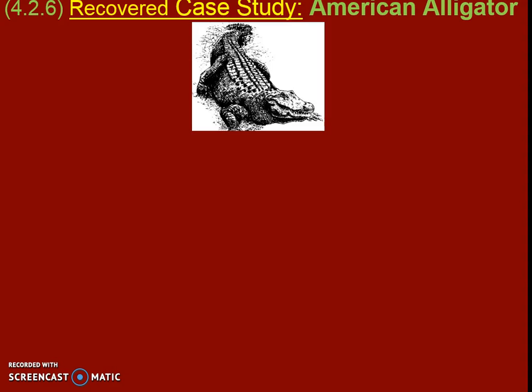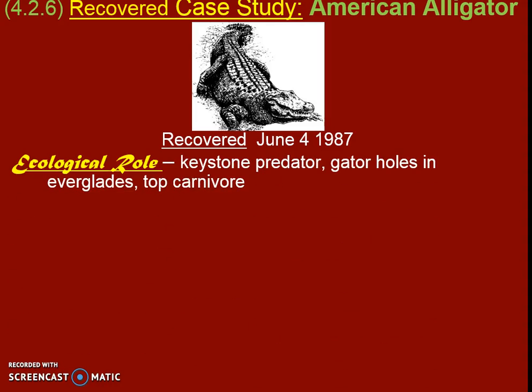This is our positive case study. The bald eagle is another example of a recovered species, but the American alligator is a really good example. It was considered recovered from endangered status on June 4th, 1987, by the Red List. Its ecological role is as a keystone predator — a top-order carnivore keeping its prey in check in the Everglades. Keystone again means that it helps keep other organisms in check and keeps the ecosystem stable.